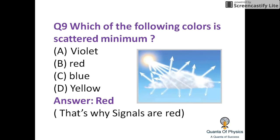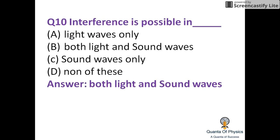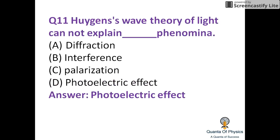Scattering is inversely proportional to lambda. Interference is possible in both light and sound waves. The wave theory of light cannot explain the photoelectric effect, but it does explain diffraction, interference, and polarization.